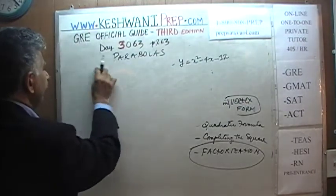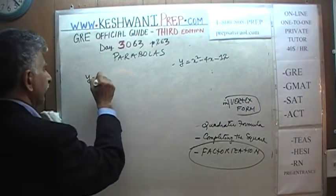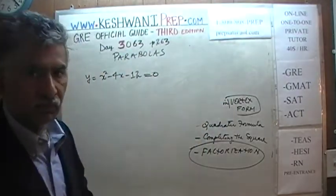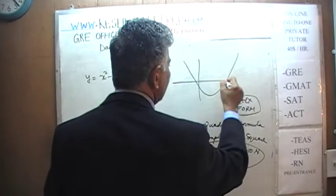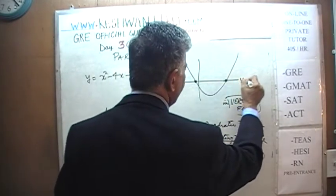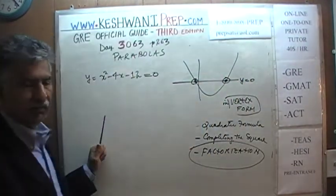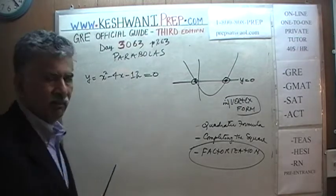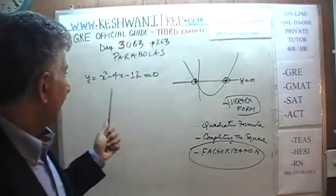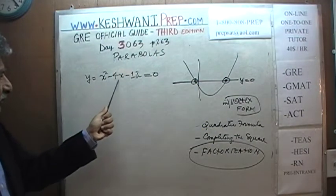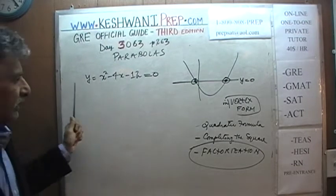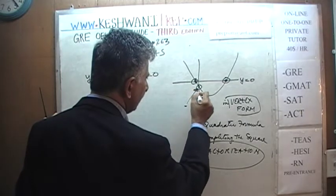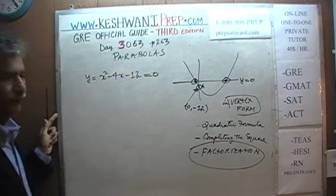Here is our parabola: y = x² - 4x - 12, and we set it equal to 0 because we are looking for the roots — the places where the parabola cuts the x-axis, where y = 0. The y-intercept is very simple: when x = 0, y = -12. So the y-intercept is the point (0, -12).